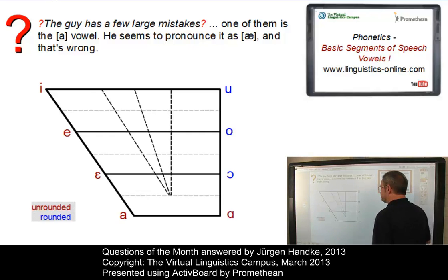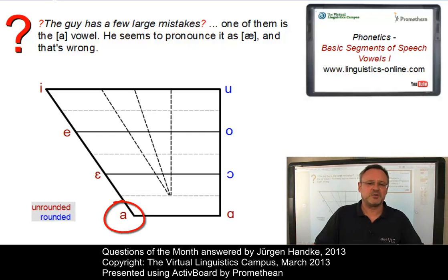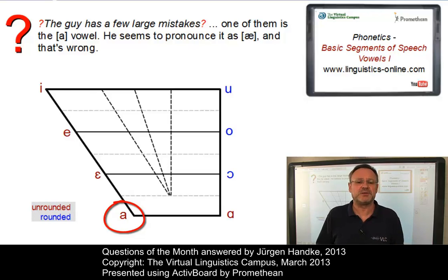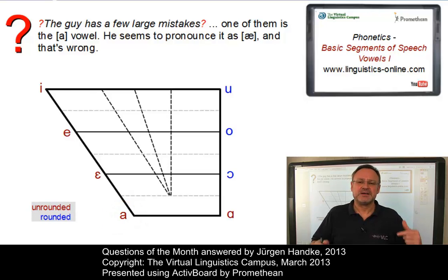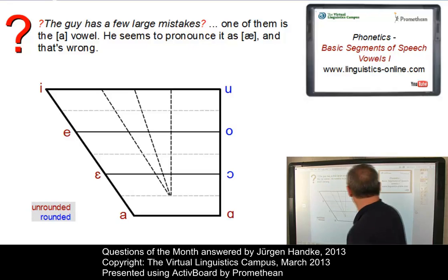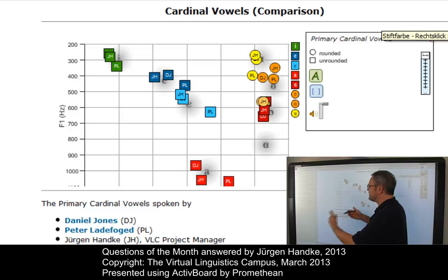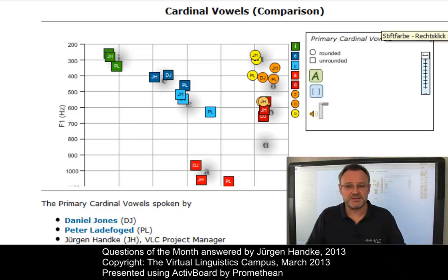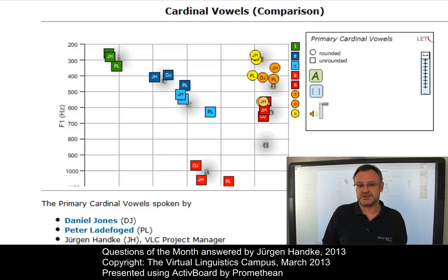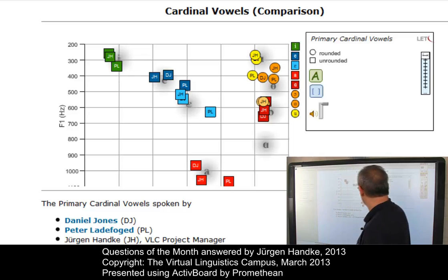Cardinal vowel number 4 is defined as a vowel with a maximum opening of the mouth with the tongue flat and low in the mouth. In the language index of the Virtual Linguistics Campus, we provide you with the option acoustic vowel charts, where you can access the cardinal vowels produced by three speakers: Daniel Jones, Peter Ladefoged, and myself. Here is our cardinal number 4 — let's start with Daniel Jones.